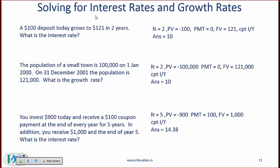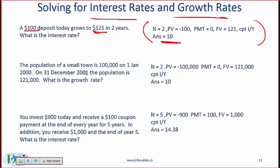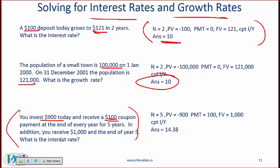You can also use the calculator to solve for interest rates and growth rates, which are treated similarly. A $100 deposit growing to $121 in two years gives a rate of 10%. A population growing from 100,000 to 121,000 in two years gives a growth rate of 10%. For a bond-like problem — invest $900 today, receive $100 coupon at the end of every year for five years, plus $1,000 at the end of year five — plugging in those numbers solves for the yield to maturity, just like a straight bond calculation.